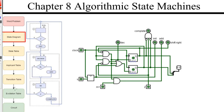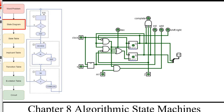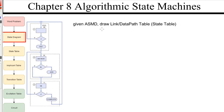Our goal is to go through the seven steps looking at an algorithmic state diagram. Our goal is to build this circuit at the end. Given an algorithmic state machine data link path drawing, let's draw the state table or the data path table or the link path table. We have a link path here — let's call that one, one that goes down here let's call that two, and one that goes this way let's call that three.